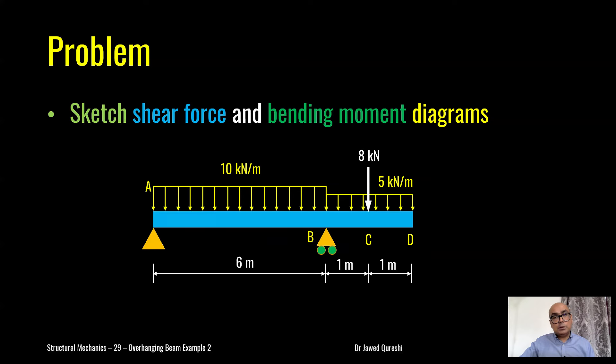Hey friends, if you're new here I am Dr. Javed Qureshi, a senior lecturer at a London university. This is the problem I want to solve today. From A to B I have a loading of 10 kilonewton per meter, B to D I have 5 kilonewton per meter, and a point load of 8 kilonewtons is applied as well.